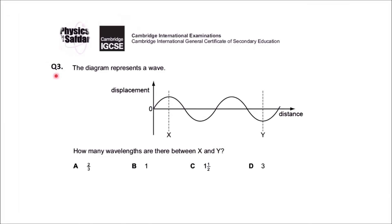This is question number three. The diagram represents a wave with distance on the horizontal axis and displacement on the vertical axis. You can see two points on the wave, X and Y. The question is: how many wavelengths are there between point X and Y? You need to calculate the total length of the wave from point X to point Y.